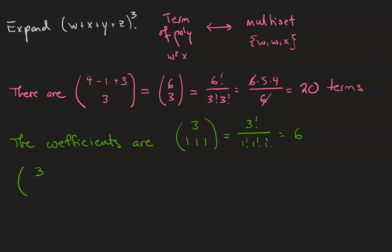We could also have 3 choose 1, 2, 1, which is 3 factorial divided by 1 factorial, 2 factorial, 1 factorial, which is just 3. Or we could have 3 choose 3, 0, 0, which is 3 factorial divided by 3 factorial, 0 factorial, 0 factorial, which is 1.